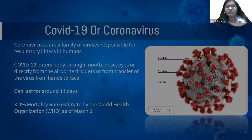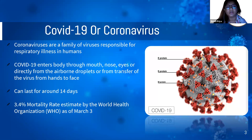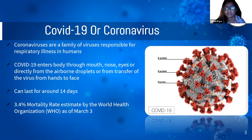Talking about coronavirus, we need to understand what coronavirus is and what its symptoms and other aspects are. Coronavirus belongs to a family of viruses and is mainly responsible for respiratory illnesses. It generally enters our body through mouth, nose, and eyes, and can also be found in the air as droplets. It can transfer through our hands or faces, and these viruses can stay in our bodies for around 14 days, though if taken care of, can be cured in seven days.